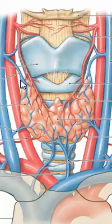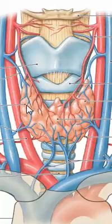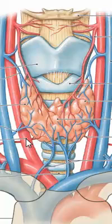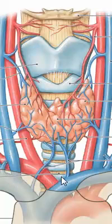This is the superior thyroid vein. This is the right lobe of the thyroid gland. Middle thyroid vein. Common carotid artery. Thyrocervical trunk.